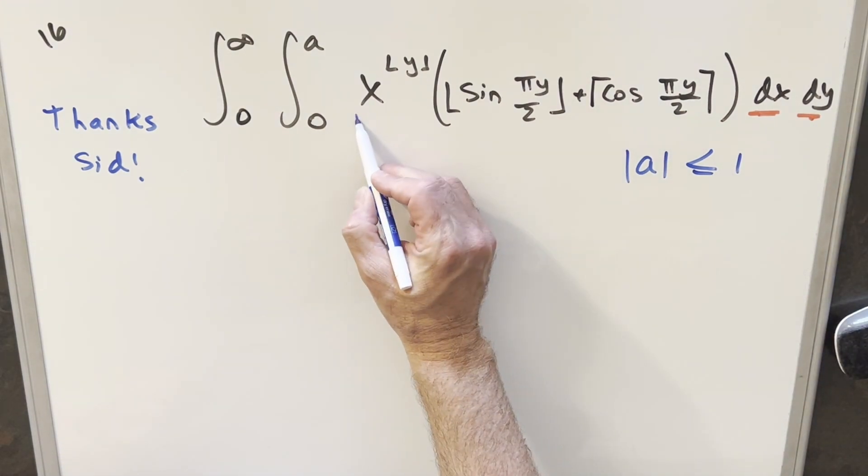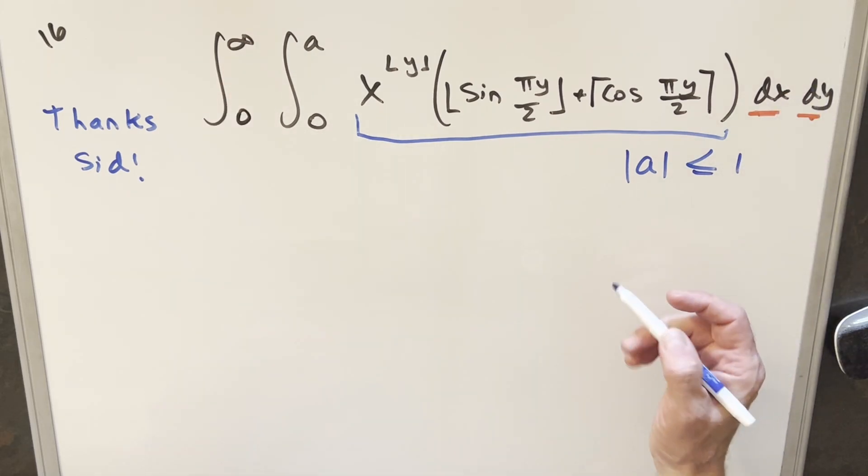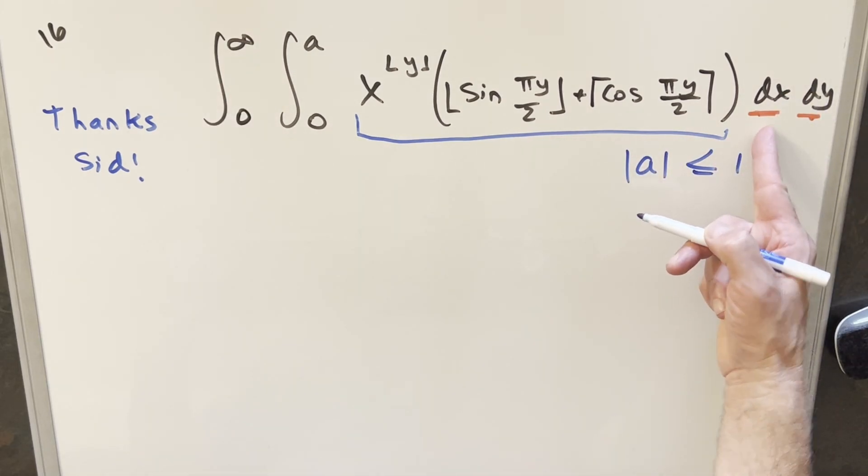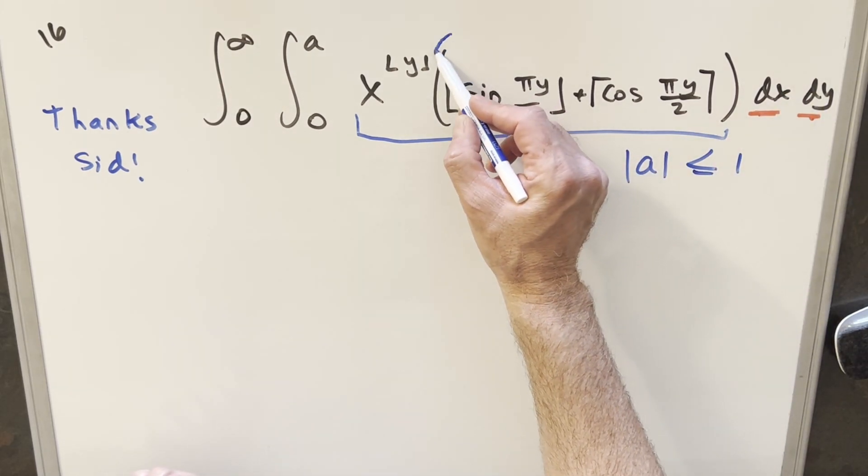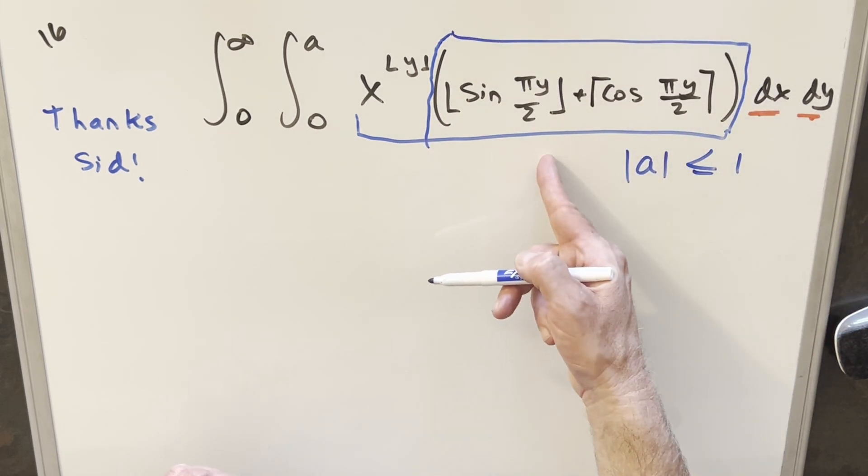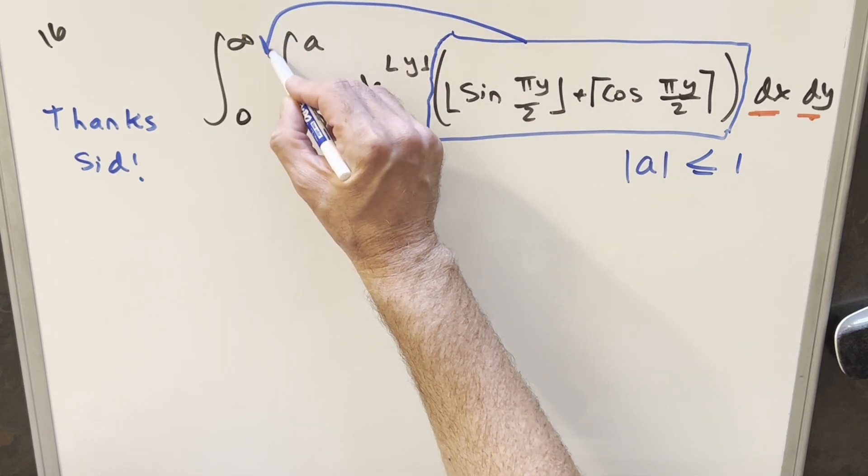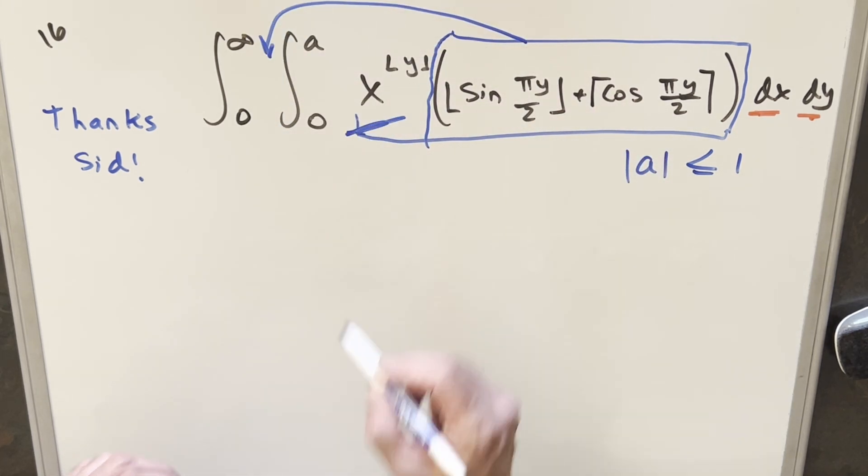Now within this, we do have both variables. But if we look at the inner integral and think about integrating with respect to x, this part right here, we have no x in this part. So this part right here is just going to be a constant with respect to x.